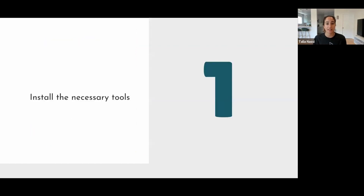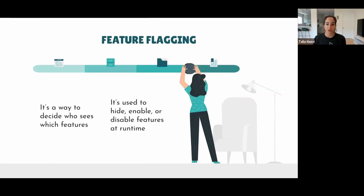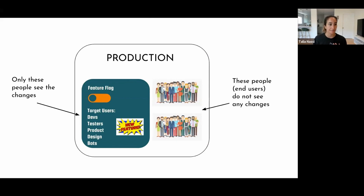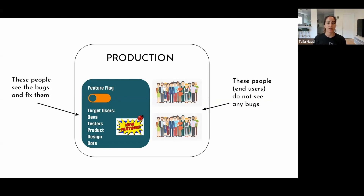The first step to set up testing in production is to install the necessary tools. The first tool you need is feature flagging, which is really the key. Feature flagging decides who sees which features — it hides, enables, or disables features at runtime. Your developers create a feature flag from the UI and target all internal teammates: dev, QA, product, design, and your automation bots. Anything related to the feature can only be seen by users inside the feature flag because the flag is off, so end users can't see anything related to the feature.